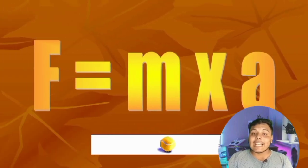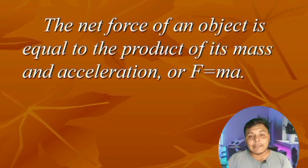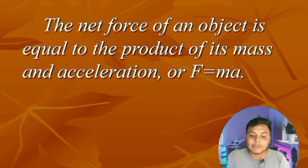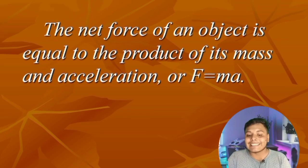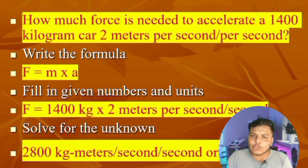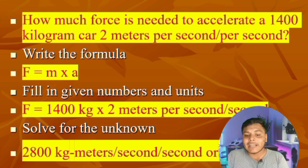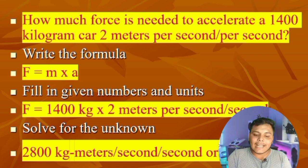The second law states that F equals M into A, where M is the mass of an object and A is the acceleration of an object. If we multiply the mass of the object and the acceleration, that gives the force on the object. The unit of force is also Newton. For example, how much force is needed to accelerate a 1400 kilogram car at two meters per second squared? You can solve it by multiplying those values.